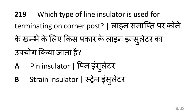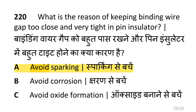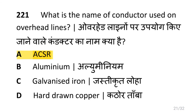Which type of line insulator is used for terminating on corner post? That is shackle insulator. What is the reason for keeping binding wire gap too close and very tight in pin insulator? That is to avoid sparking. What is the name of conductor used on overhead lines? That is ACSR.